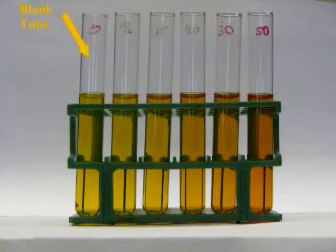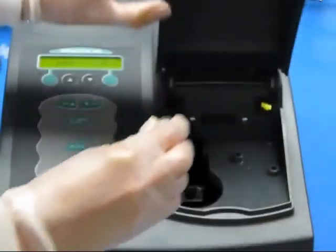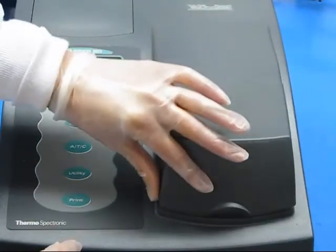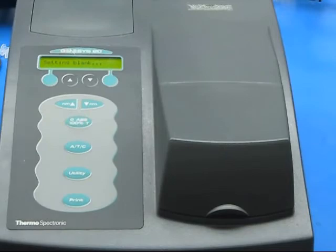Zero the spectrophotometer between each step using a blank. You will use the same blank throughout the entire lab, so do not discard it between experiments. Wipe all test tubes clean with a Kimwipe before inserting them into the spectrophotometer. Do not discard any of your tubes until you have produced an acceptable curve.